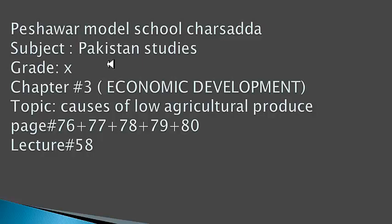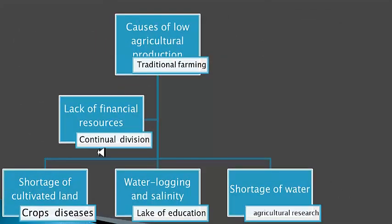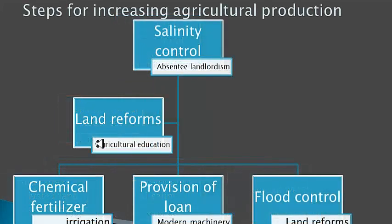Bismillahirrahmanirrahim. Students, this is Pakistan Studies Grade 10, Chapter 3: Economic Development, topic: causes of low agricultural produce. Page numbers 77, 78, 79, and 80. Lecture number 58. Steps for increasing agricultural production: salinity control, absentee land lordism, land reforms, agricultural education, chemical fertilizers, irrigation, provision of loans, modern machinery, flood control, and land reforms.